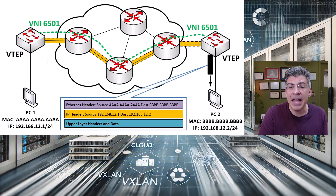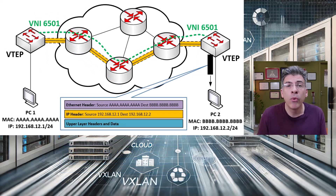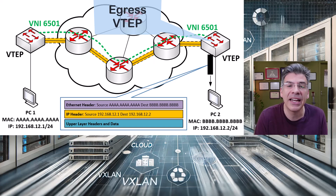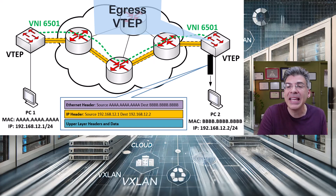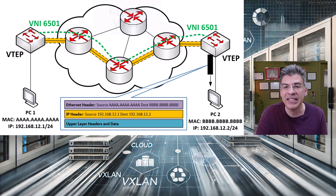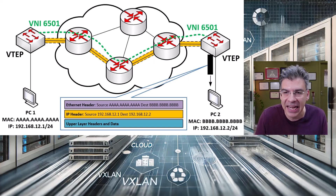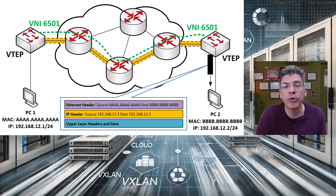The egress VTEP is the end point of the VXLAN tunnel, where the packet exits the VXLAN network and gets forwarded to the destination Ethernet network. The egress VTEP is the one that decapsulates the VXLAN packet — in other words, it removes the VXLAN header and forwards that packet to the appropriate destination.